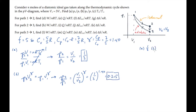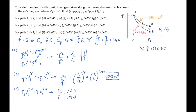Part C asks for the ratio T3 to T1. Again, the path joining those two points is an adiabatic, so we have TV to the gamma minus 1 is a constant. Solving for the ratio and substituting the value of gamma gives us 0.644.